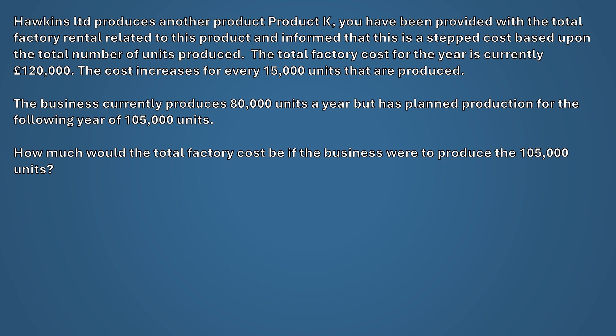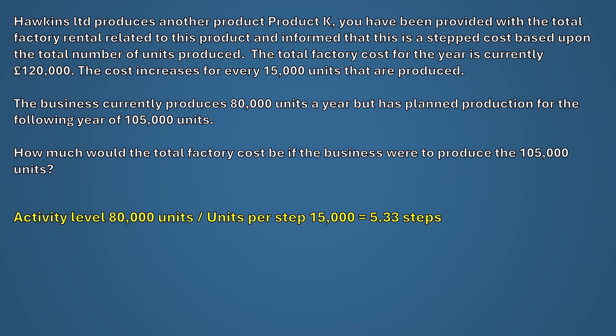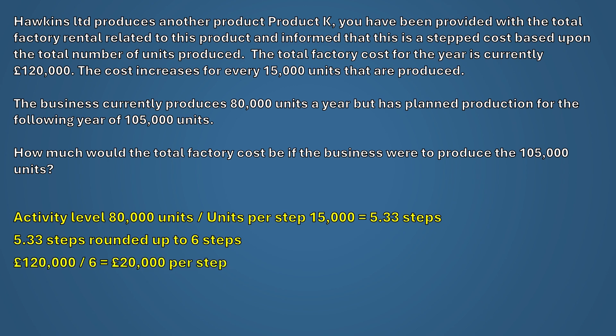In this example we do not have the cost per step, so before we can calculate the cost for 105,000 units we first need to calculate the cost per step. To do this we take the current production of 80,000 and divide by the units per step of 15,000. This gives us 5.33 steps. As we said, we can't have a partial step, so we round up to 6 steps. We now know there are 6 steps making up the total factory cost of £120,000. Dividing £120,000 by 6 steps gives us a cost per step of £20,000.